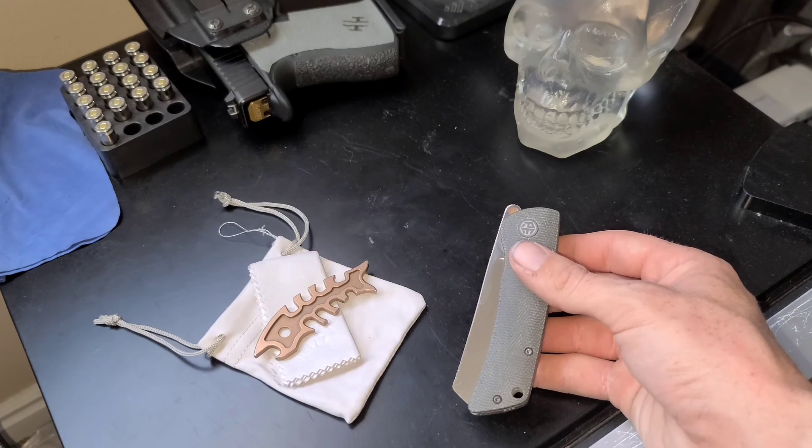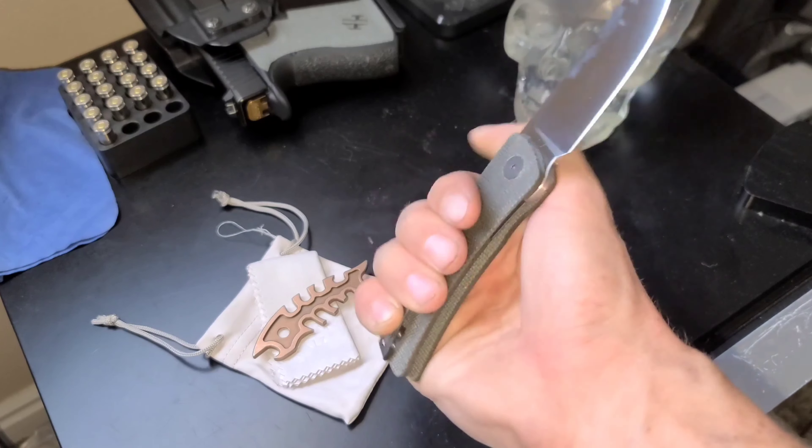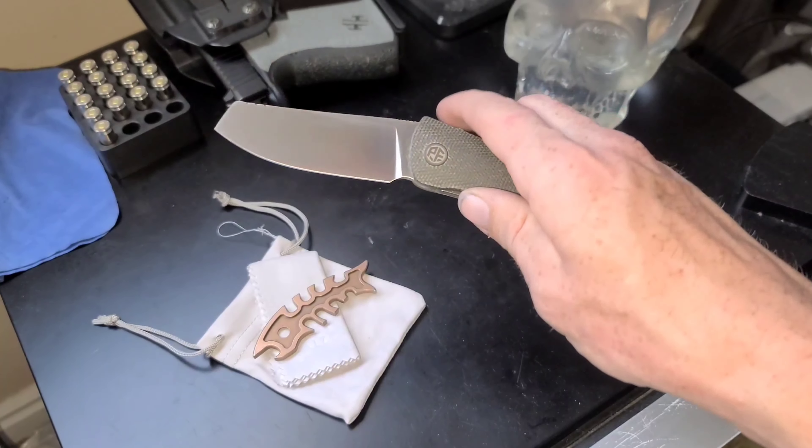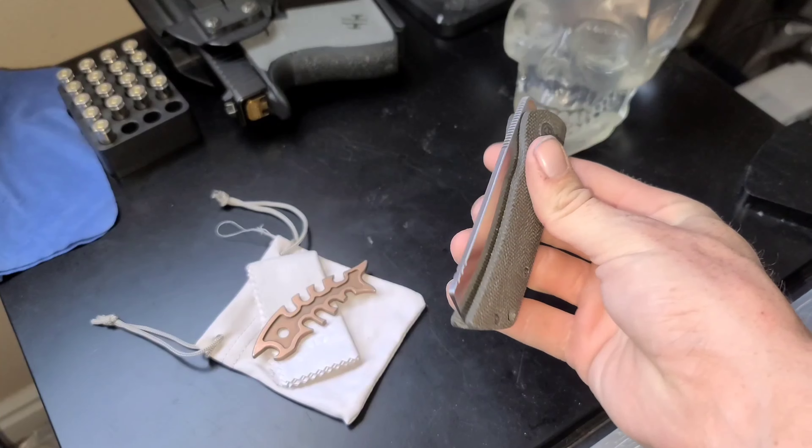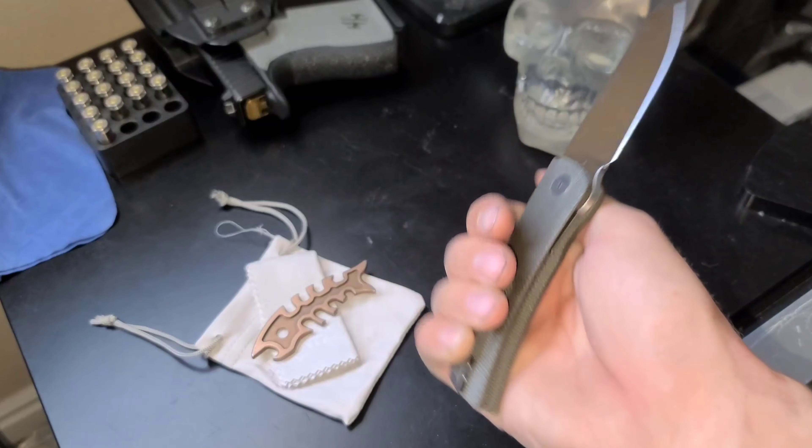So yeah, for the price I'd say D2 is a pretty good option for EDC just because it has pretty good edge retention, it has pretty good toughness. It's not going to be the most easy to sharpen, but it's fairly easy compared to other harder steels.